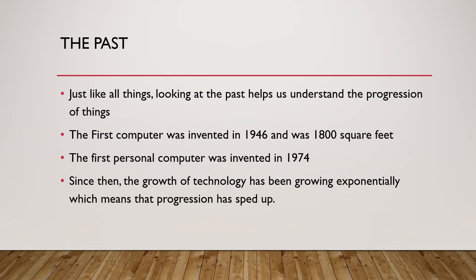First, I want to start by talking about the past. Looking at the past helps us understand progression. Technology itself has an exponential growth rate, which means it started off slowly — one or two inventions at a time — and has been increasing exponentially since. For example, the first computer was invented in 1946 and was about 1,800 square feet. Personal computers came in 1974, and cell phones have gone well beyond that technology.